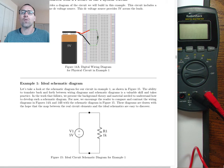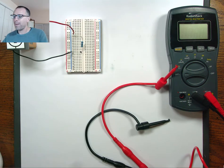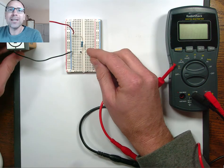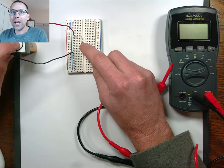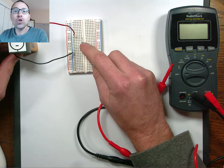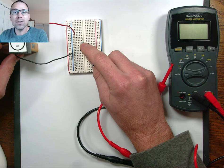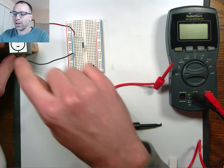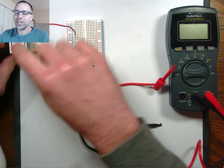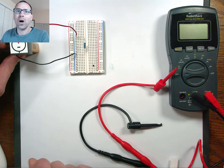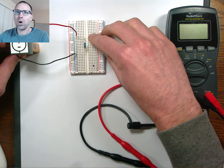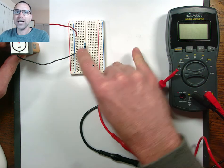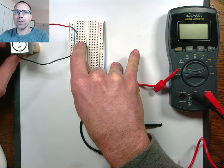Let's go ahead and switch over to the actual physical circuit. In this case, remember this is a 2-element circuit because I have 1, 2 elements. Each element is a 2-lead or 2-terminal element. In other words, the voltage source has 1, 2 wires — 1 on the top, 1 on the bottom. The resistor has 1, 2 wires and they're connected through the breadboard.